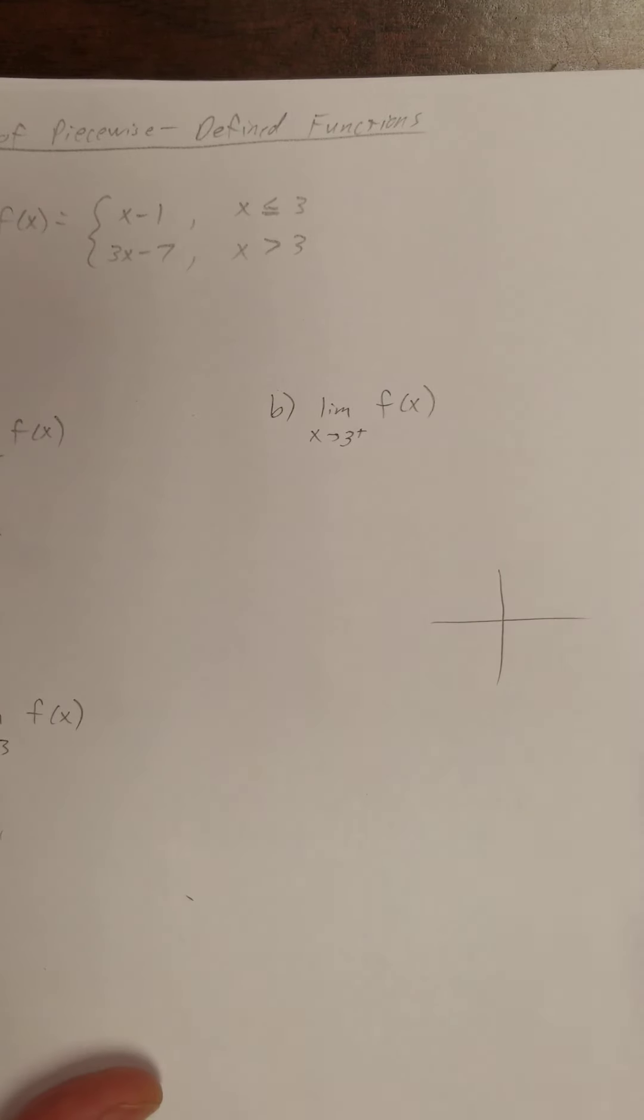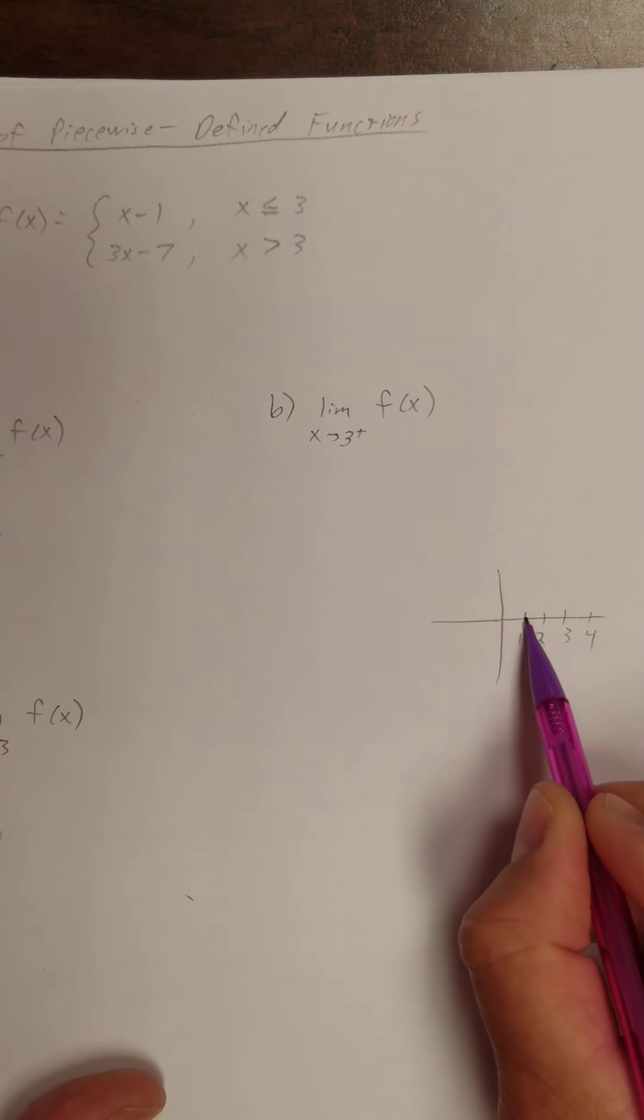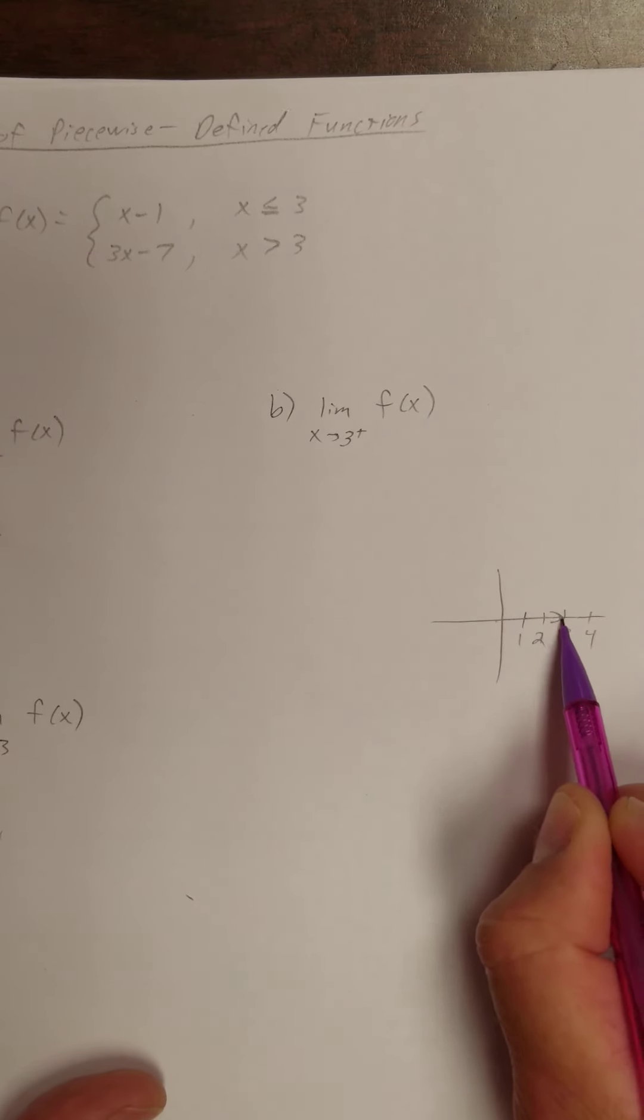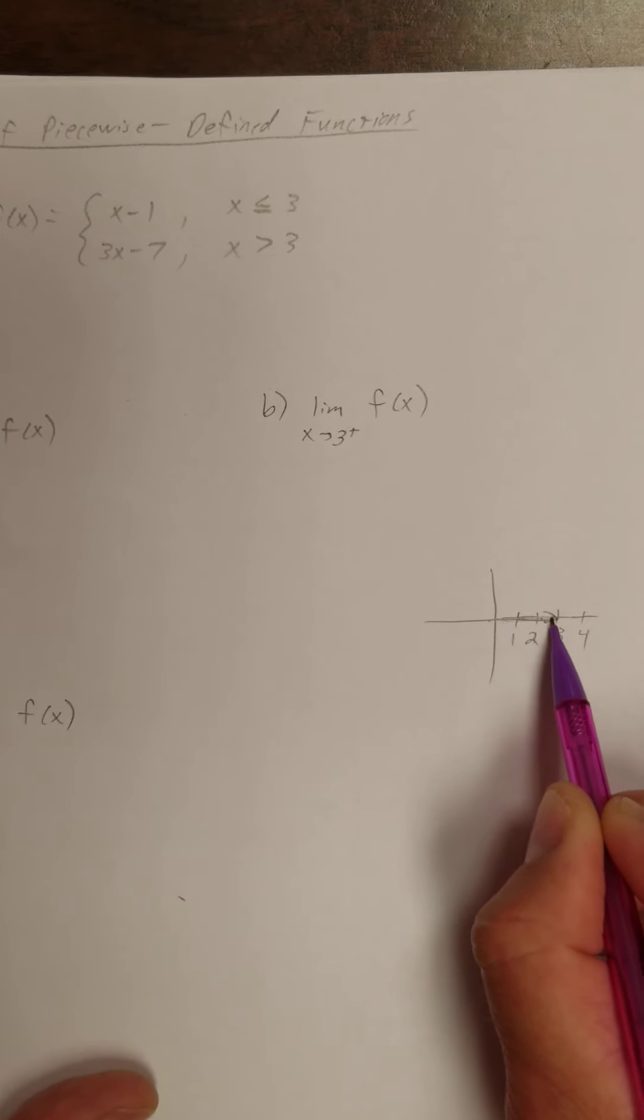Let's say that we have a coordinate plane. Here's 1, here's 2, here's 3. As I approach 3 from the left-hand side, I'm going through values that are less than 3.